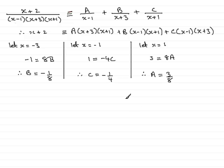So we're nearly at the end now. We've got our values of a, b, and c. All we need to do is put them back in. So we have x plus 2 over the three linear factors x minus 1, x plus 3, and x plus 1. And we see that this is identical to a over x minus 1. a is a positive value, so we'll put that as 3 eighths over x minus 1. We'll talk about this later because it doesn't look very nice at the moment.